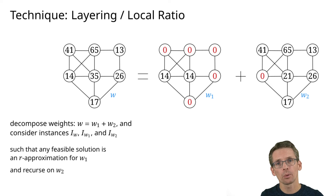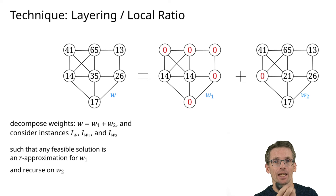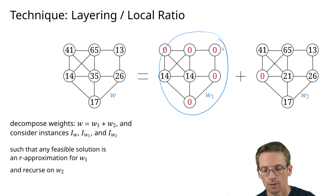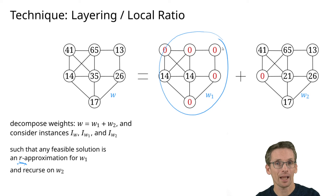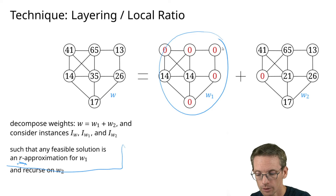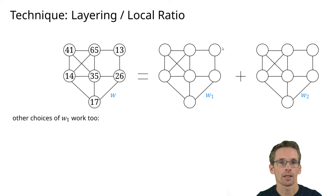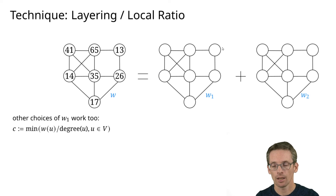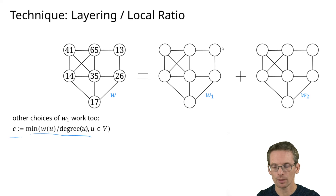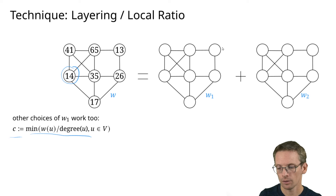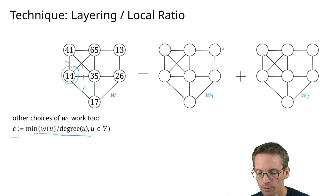To summarize the technique: we decompose the original weight w into w1 + w2 such that any feasible solution for w1 is already an r-approximation, then recurse on w2. There is an interesting alternative choice for w1: let c be the minimum over all vertices of weight(v) divided by degree(v). In the example, the minimum is attained at the vertex with weight 14 and degree 4, giving c = 14/4 = 3.5.